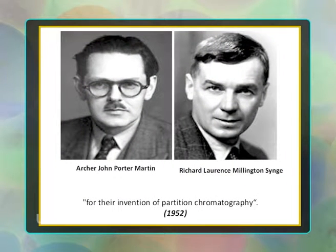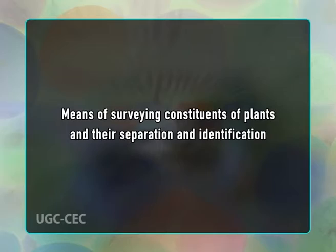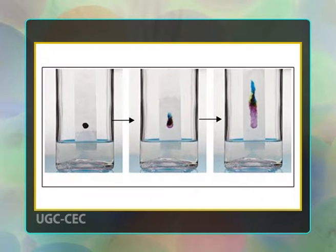Paper chromatography: The discovery of paper chromatography in 1943 by Martin and Synge provided for the first time the means of surveying constituents of plants and for their separation and identification. There was an explosion of activity in this field after 1945. Paper chromatography is a planar chromatography system wherein a cellulose filter paper acts as a stationary phase on which the separation of compounds occurs. Common solvents used include pentane, propanone, and ethanol.